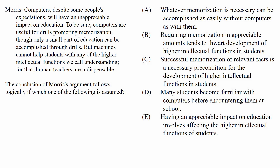To determine what kind of question this is, let's jump below the passage to the question itself. The conclusion of Morris' argument follows logically if which one of the following is assumed. This idea of an assumption guaranteeing a conclusion to follow from its evidence means that we are dealing with a sufficient assumption question.